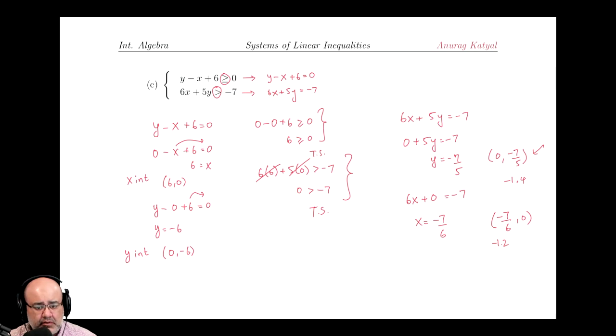All right, for the last one, sorry, part C, we notice a couple of things. So we can rewrite these as equations first, which is y minus x plus 6 equals 0, and 6x plus 5y equals negative 7.